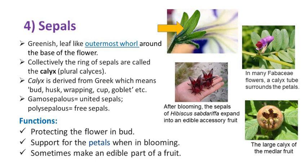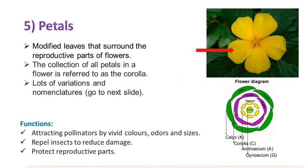Sepals protect the flower and bud, and support the petals when in bloom. Sometimes sepals make an edible part of a fruit. Petals are the modified leaves that surround the reproductive parts of flowers. The collection of all petals in a flower is referred to as the corolla. There are lots of variations and nomenclatures related to this, which we'll cover in the upcoming slides.